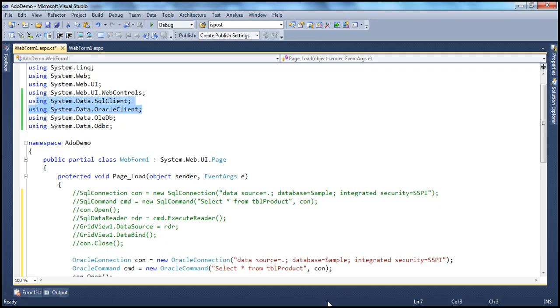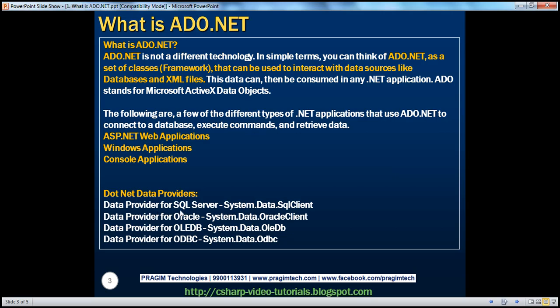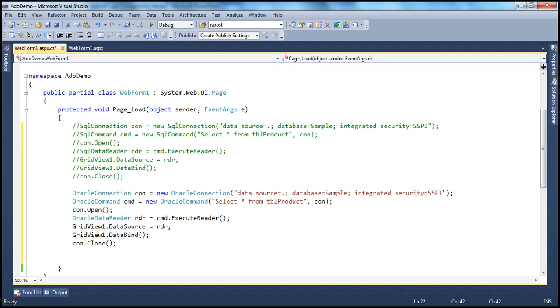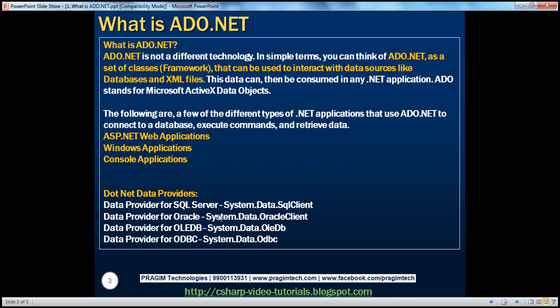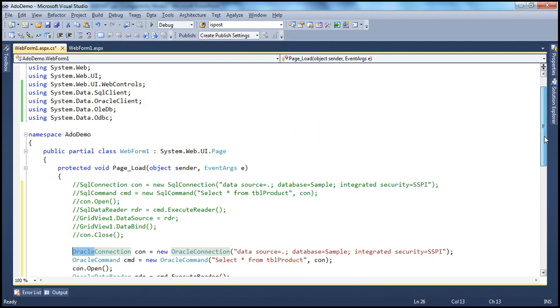From this we can say: the .NET data provider for SQL Server is System.Data.SqlClient, meaning all the classes that help us connect to SQL Server, execute commands, and retrieve data are present in System.Data.SqlClient. If the database is Oracle, those classes are present in System.Data.OracleClient. Another naming pattern to observe: if it's SQL Server, the prefix is SQL. If it's Oracle, the prefix is Oracle — OracleConnection, OracleCommand, OracleDataReader. If the data source is an OLEDB data source — like Microsoft Access, Excel, etc. — you use OleDbConnection, OleDbCommand, OleDbDataReader, present in the namespace System.Data.OleDb.